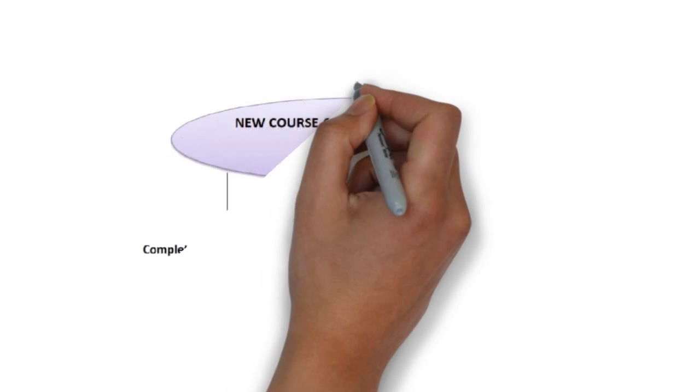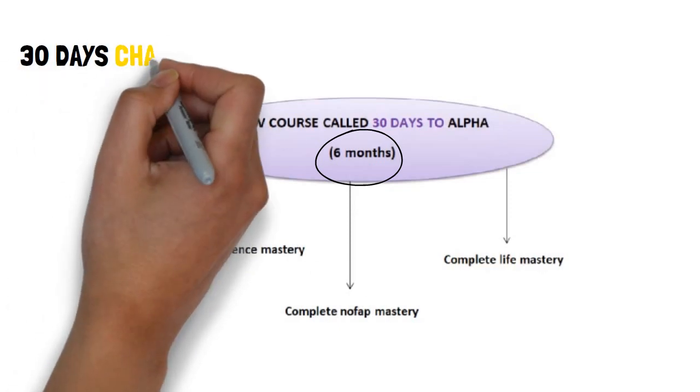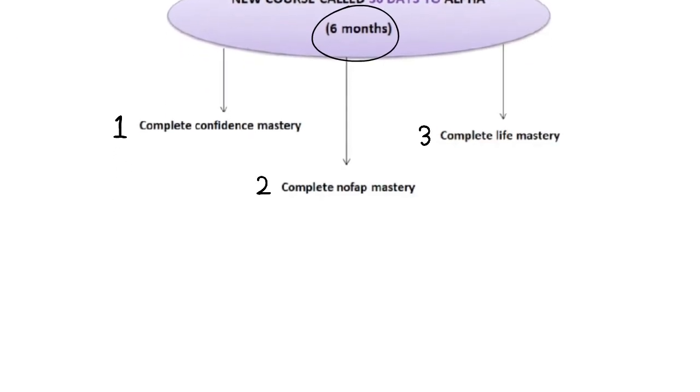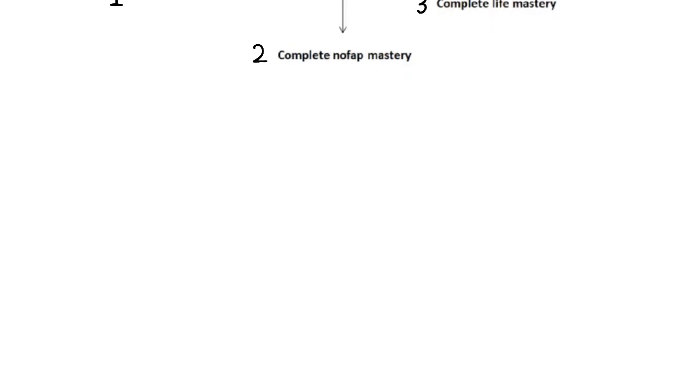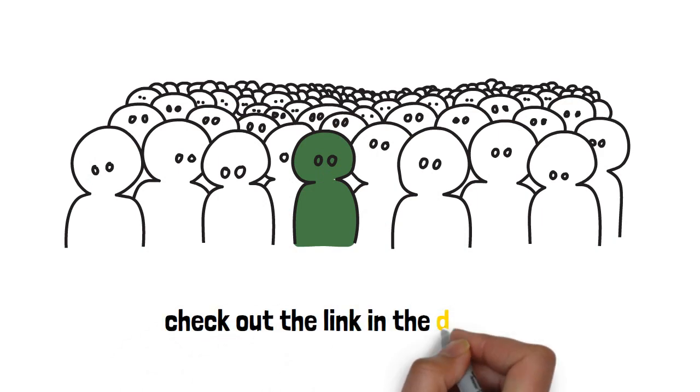But before we start with this video, I just want to mention our new course called 30 Days to Alpha that we have been working on for almost 6 months. It is based on 3 different 30 day challenges and more very useful things that will completely transform your life. The course includes Complete Confidence Mastery, Complete Nofap Mastery and Complete Life Mastery. So if you are ready to skyrocket your confidence by over 5 times, master the power of Nofap, completely change your life and become the alpha of your group, check out the link in the description.